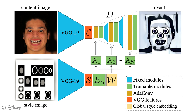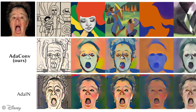Then, a final step uses the new kernels at multiple scales of the content image decoder. Going beyond the computation of simple global statistics, the kernel prediction in AdaConv allows our method to transfer both statistical and structural information from the style image into the content image.